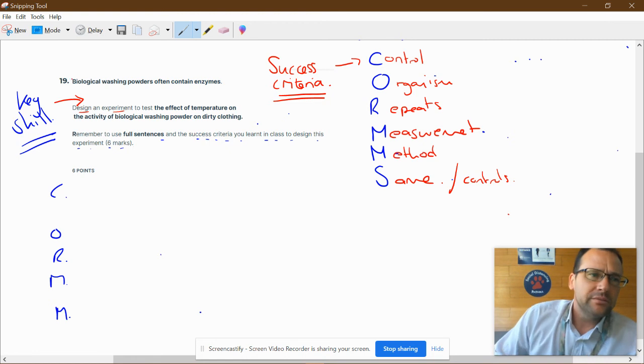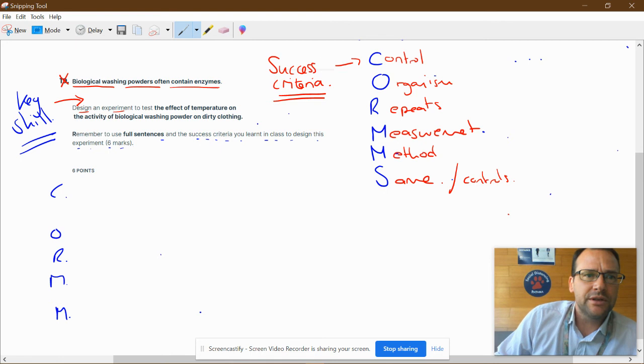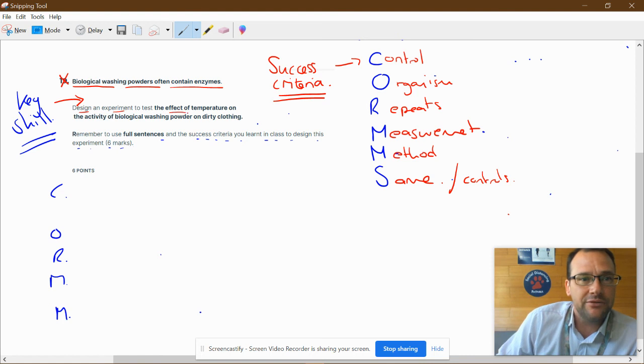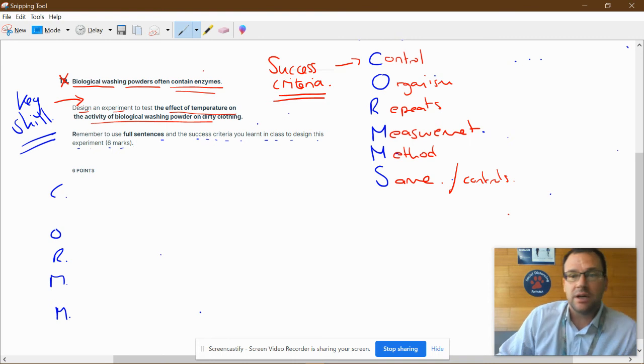This one was about biological washing powders containing enzymes. All we have to do is design an investigation to test the effect of temperature on the activity of the enzyme. So we're changing the temperature, we're testing the activity.